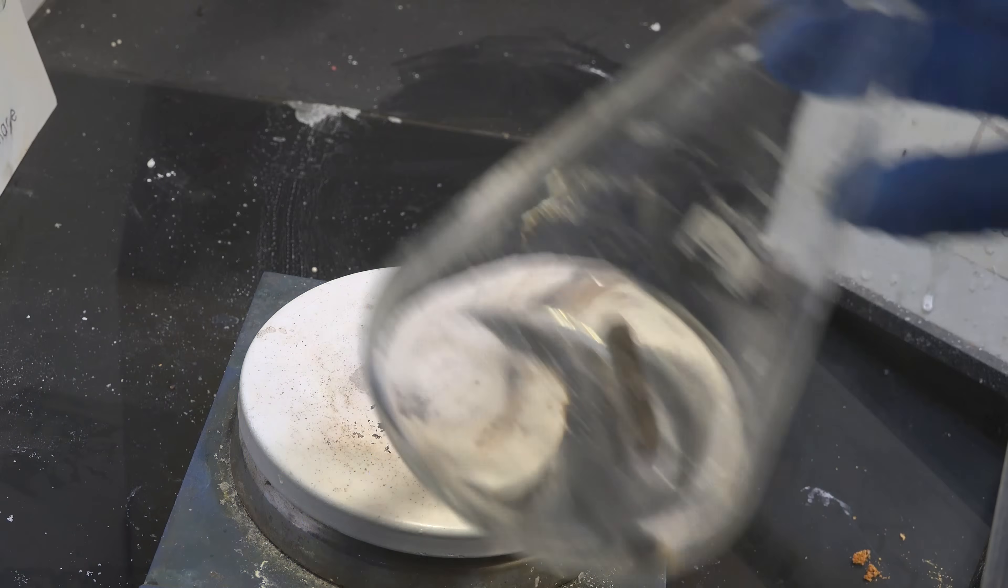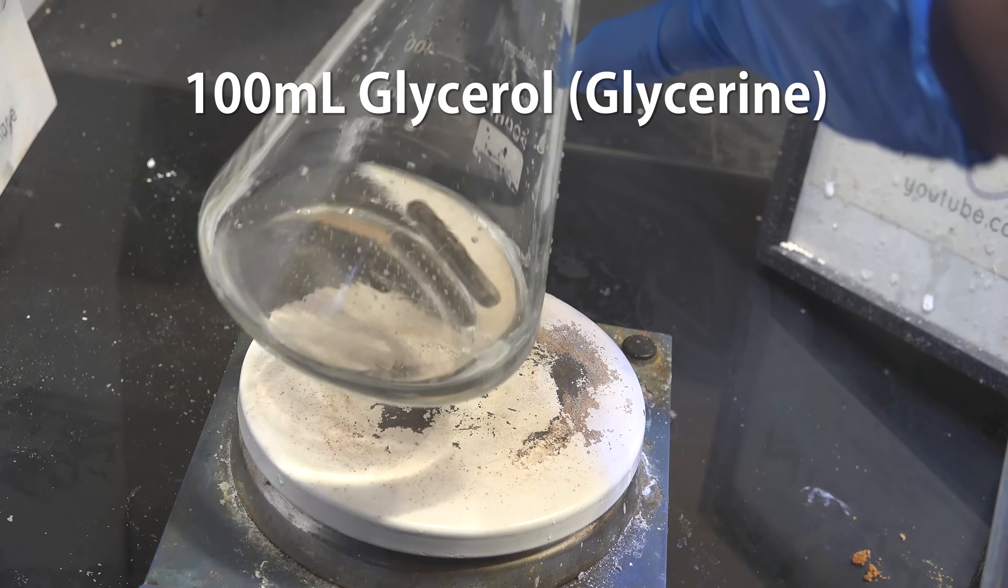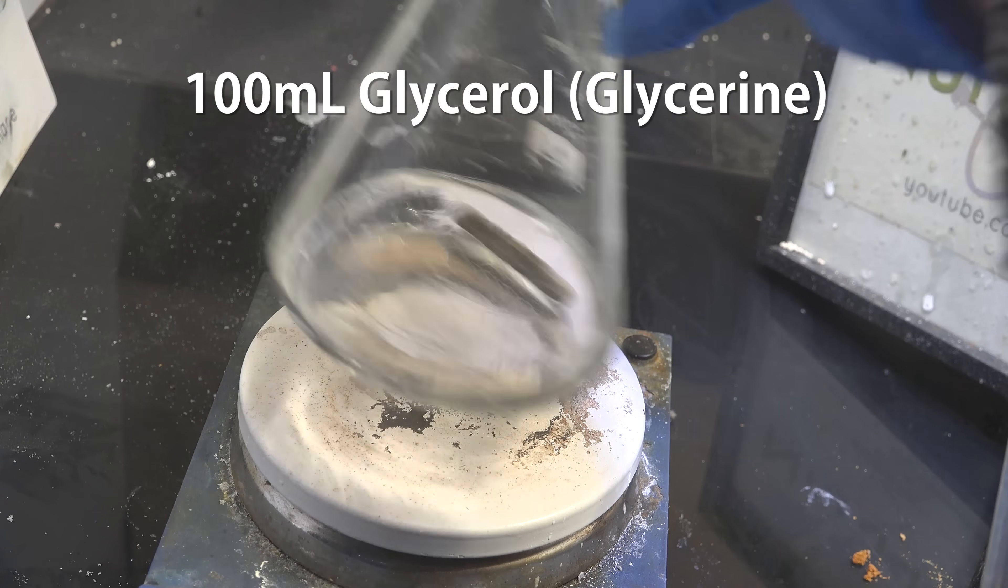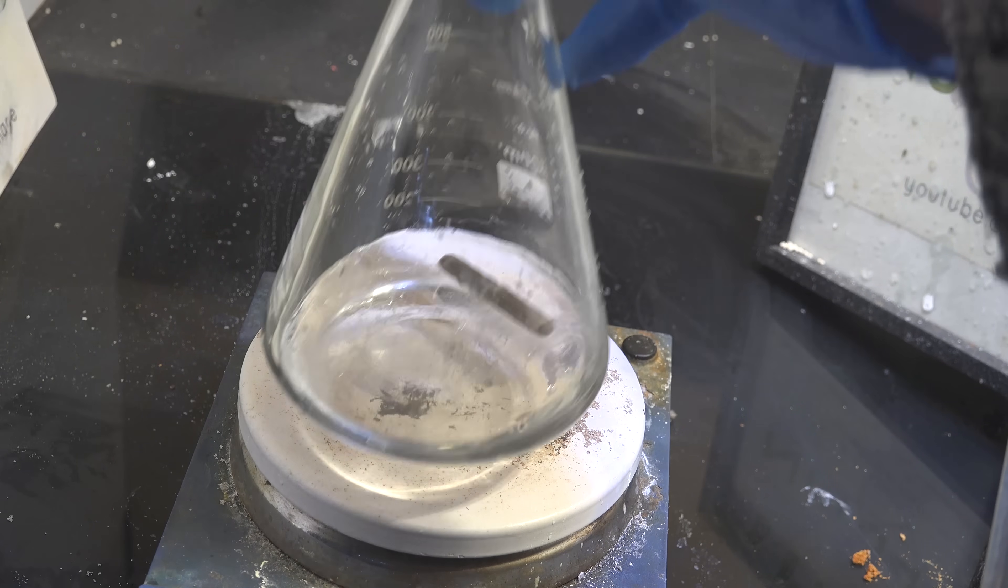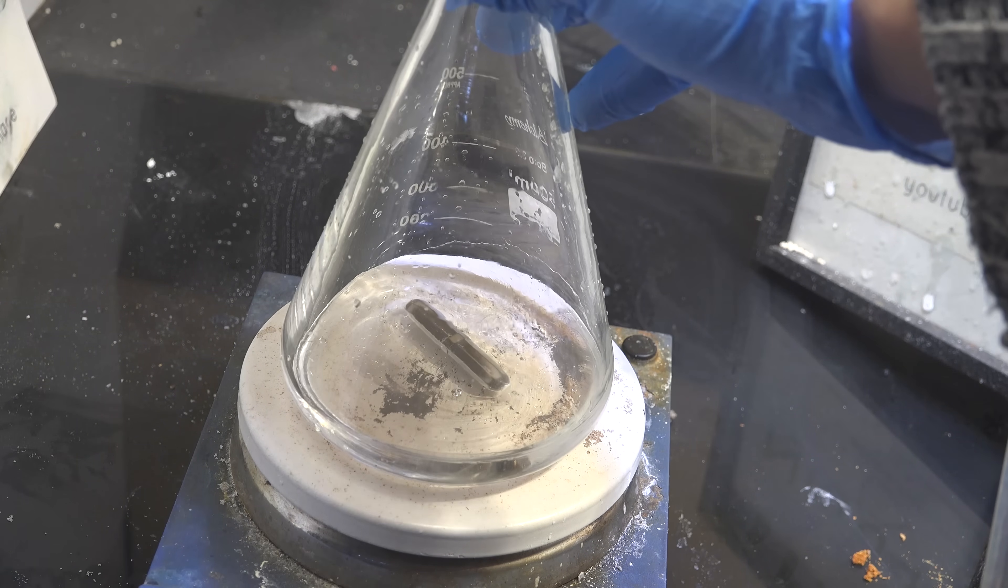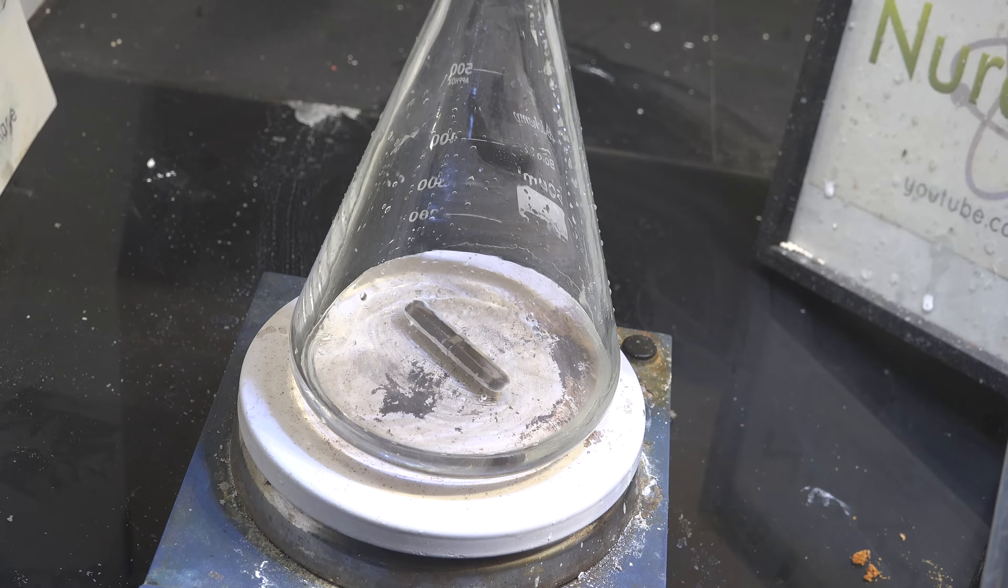So let's get started. Get an Erlenmeyer flask with 100 mL of glycerol, also known as glycerin. This can be found at pharmacies or from soap making companies. I recommend soap companies as it's cheaper.